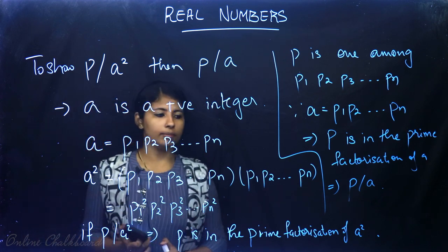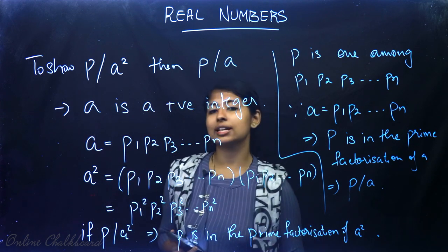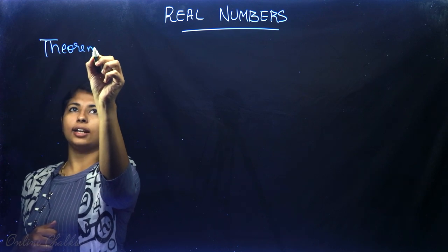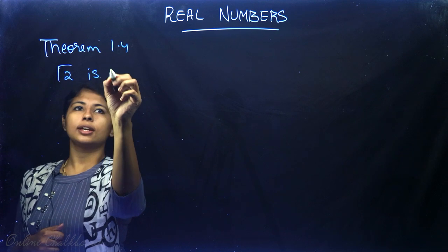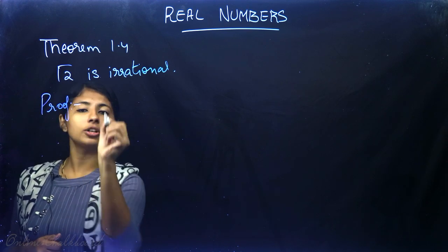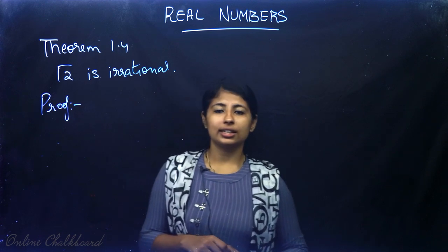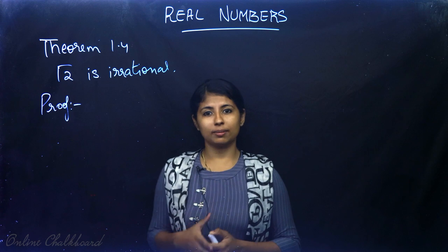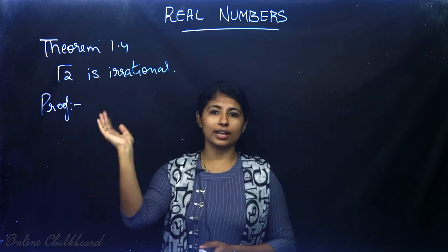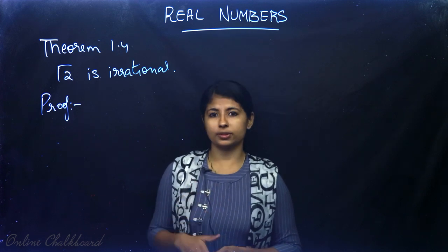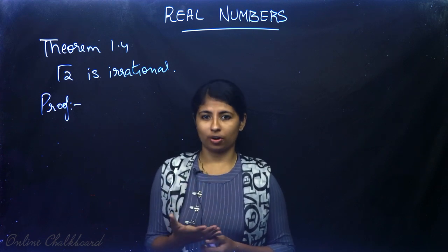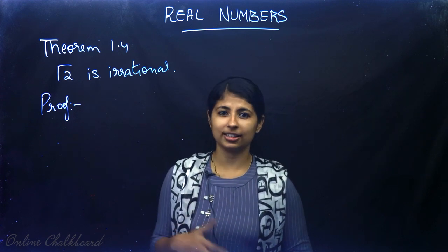We will use this theorem to prove that √2, √3, or √p in general is irrational. Now, Theorem 1.4 says that √2 is irrational. We will prove this using the contradiction method. We assume the opposite — that √2 is rational — then arrive at a contradiction and conclude that our assumption was wrong, therefore √2 is irrational.